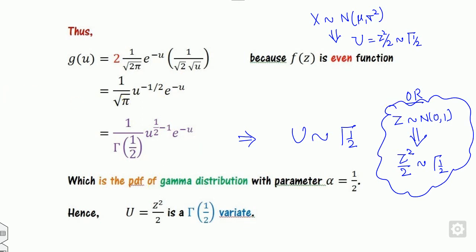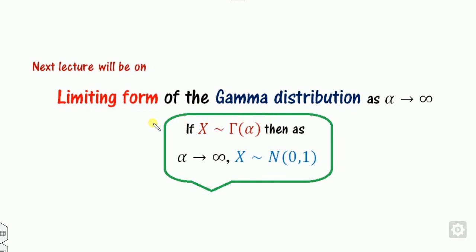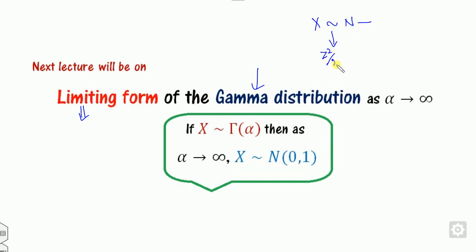Remember this result — it is very important for competitive examinations. In the next lecture we will see the limiting form of the gamma distribution: if X follows the gamma distribution and alpha approaches infinity, then X follows the normal distribution. That is the reverse of today's result.